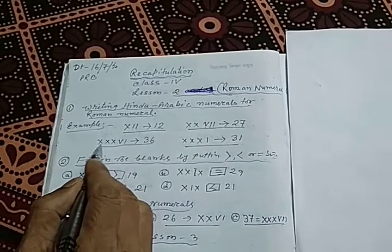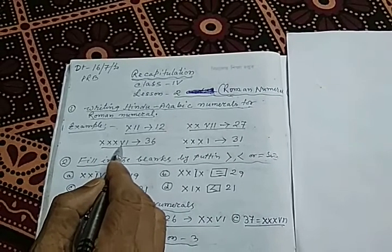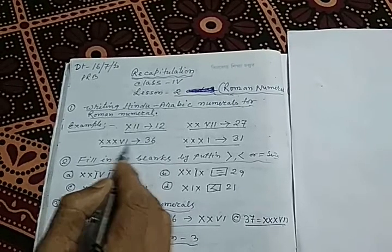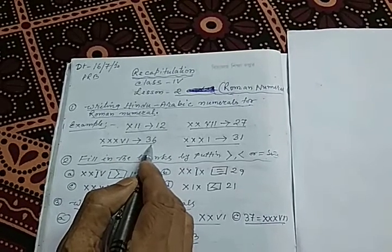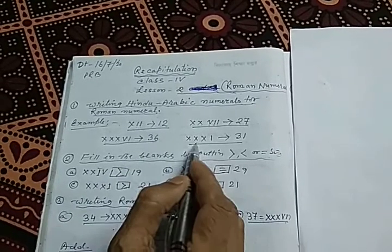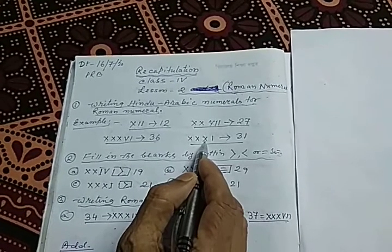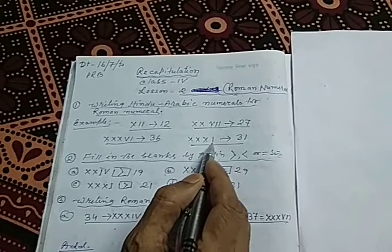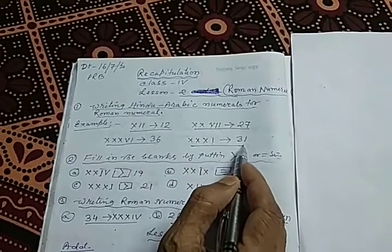In example 3, you see that 10 plus 10 plus 10 equals 30, plus 5 equals 35, plus 1 equals 36. In Hindu-Arabic number, it is written as 36. In the fourth example, 10 plus 10 plus 10 equals 30, plus 1 equals 31. In Hindu-Arabic number, this is 31.